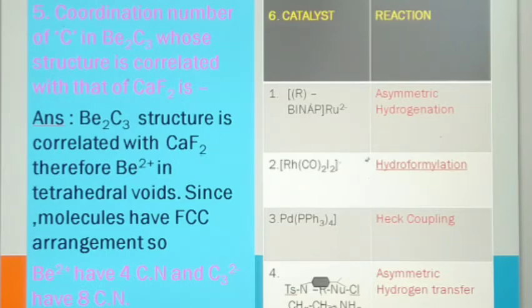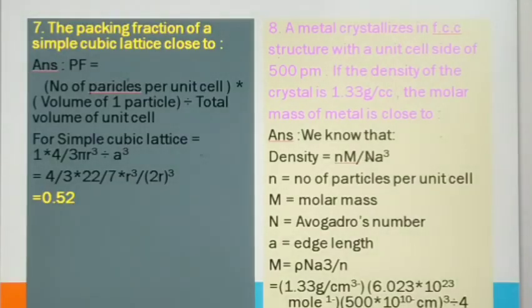In the next question, they asked about catalysts. They have given the catalyst and you have to tell about the reaction. I have written it - column 1 was carrying the catalyst and column 2 was carrying the reaction, you have to match them. So I have written, you have to learn these are the catalysts which are generally used in reactions: asymmetric hydrogenation, hydroformylation, Heck coupling, asymmetric hydrogen transfer, palladium triphenylphosphine with four molecules, rhodium dicarbonyl. This is about your catalyst and the reaction. Now I'll be taking the next question from the solid chapter.